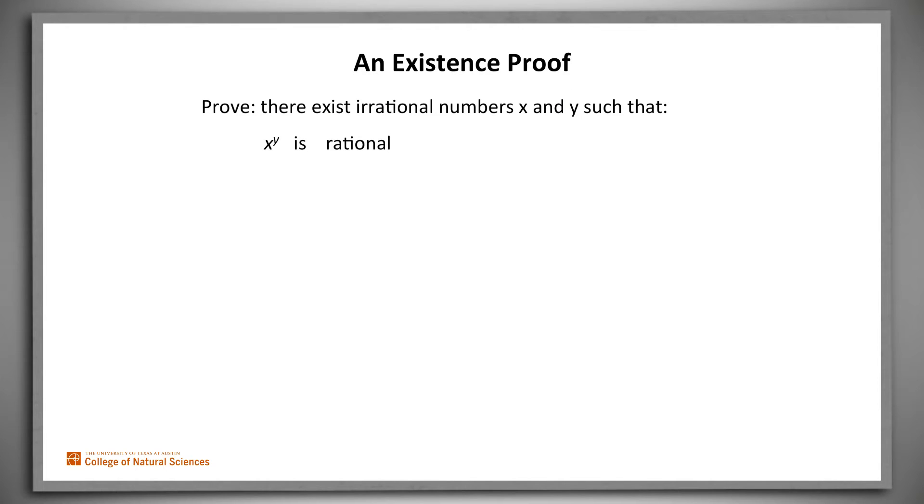We'll prove that there exist irrational numbers x and y such that x to the y is rational. Let's start by letting x and y both be the square root of 2. Assume that we've already proved, it's straightforward to do that, that the square root of 2 is irrational. Now consider x to the y.